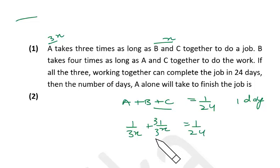3 by 3x, sorry, 4 by 3x is equal to 1 by 24. So x is equal to 32.